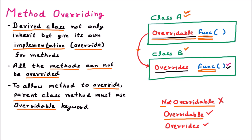When the child class B is going to override the method available in the parent class, the 'func' method of the child class applies the keyword 'overrides'. The 'overrides' keyword says that yes, I am going to override you - now my implementation will work and your implementation will not work. That is the meaning of overrides.